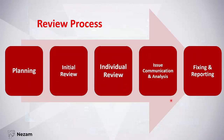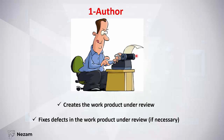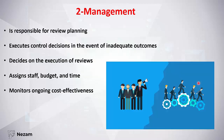Now, what are the roles and responsibilities inside the formal review? The first person is the author — the person who created the work product under review. The author fixes the defects in the work product if necessary. The second person is management — for example, the team leader or manager. Management is responsible for review planning, the first step of the review process.